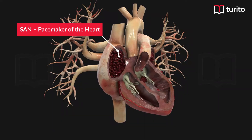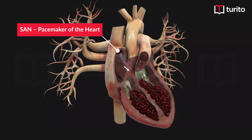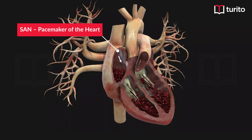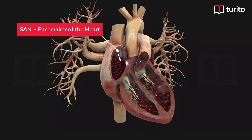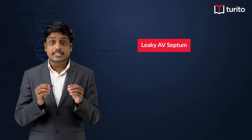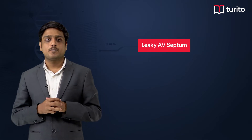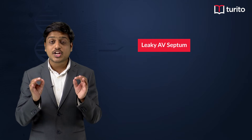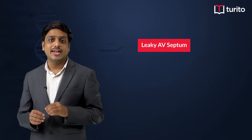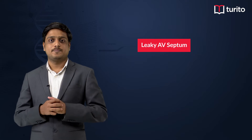When the atria contract, the pressure in the atria builds up. This pressure allows the atrioventricular valves — the bicuspid valve and the tricuspid valve — to open. As the valves open, the blood present in the atria is pushed into the ventricles. However, even before the atrioventricular valves open, 80% of the atrial blood flows into the ventricles since the atrioventricular septum is leaky. The opening of the atrioventricular valves allows only the remaining 20% of the blood to flow into the ventricles. This is how the atrial systole occurs.